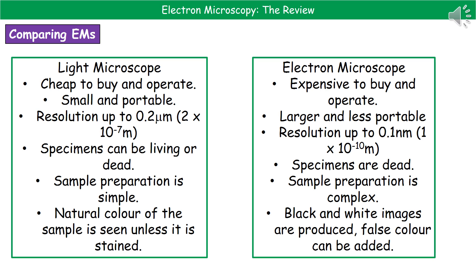If we think about size and portability, the light microscope is small and portable, so you can take it out into the field and use it in the middle of a rainforest. The electron microscope is not portable at all — it's pretty big. Regarding resolution, the light microscope only goes up to 0.2 micrometers, whereas the electron microscope has a resolution of 0.1 nanometers — that's 2×10⁻⁷ compared to 1×10⁻¹⁰ metres — a significant difference.